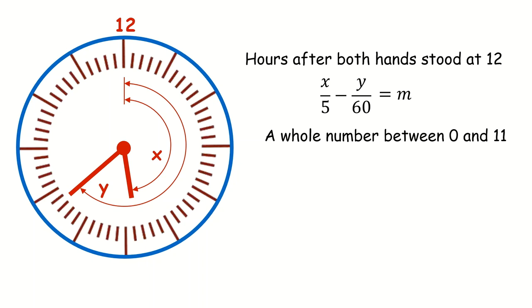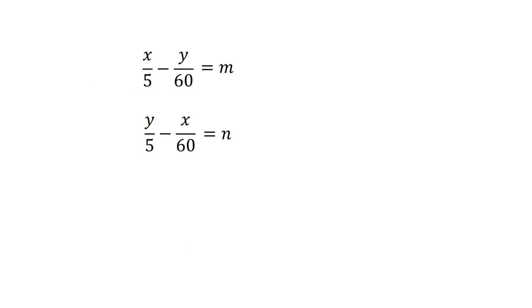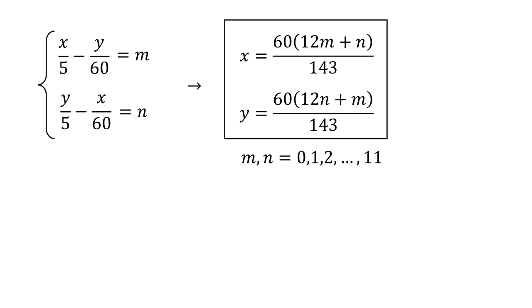Now if you switch between x and y, you get this. Again, it's going to be a whole number between 0 and 11 and we're going to call it n. And we have a system of equations for x and y, which we can solve and you get this. m and n are whole numbers or integers from 0 to 11.